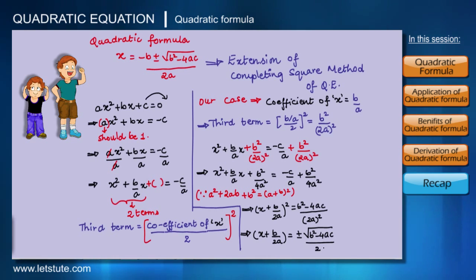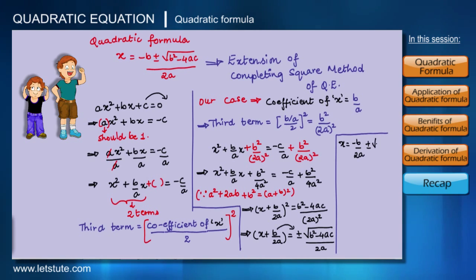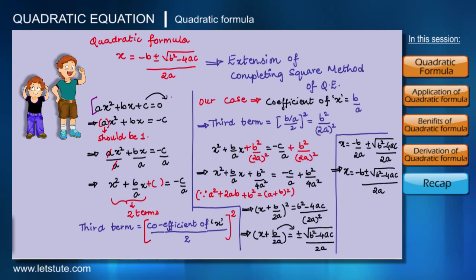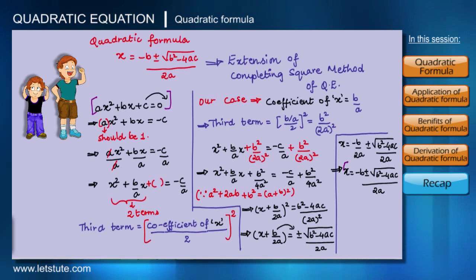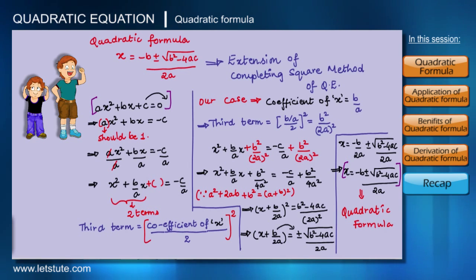Taking b/(2a) to the right-hand side, we get x equals minus b/(2a) plus or minus square root of (b² minus 4ac) divided by 2a. This simplifies to x equals minus b plus or minus square root of b² minus 4ac, all divided by 2a. This is the quadratic formula, used for solving any quadratic equation ax² plus bx plus c equals 0.